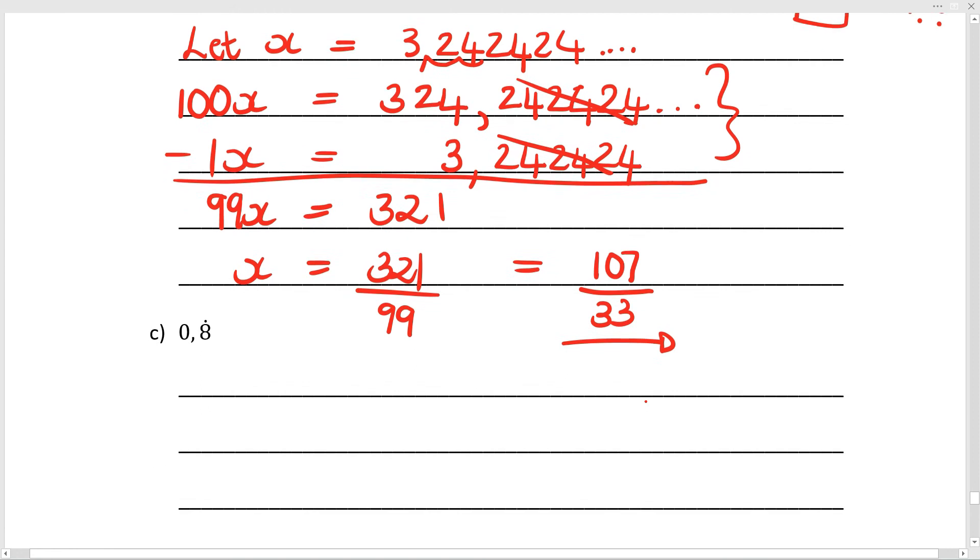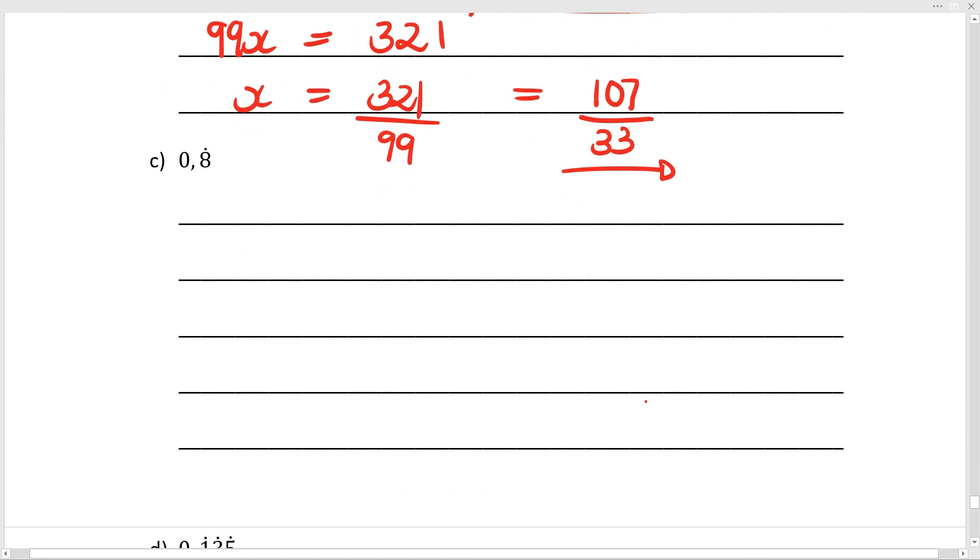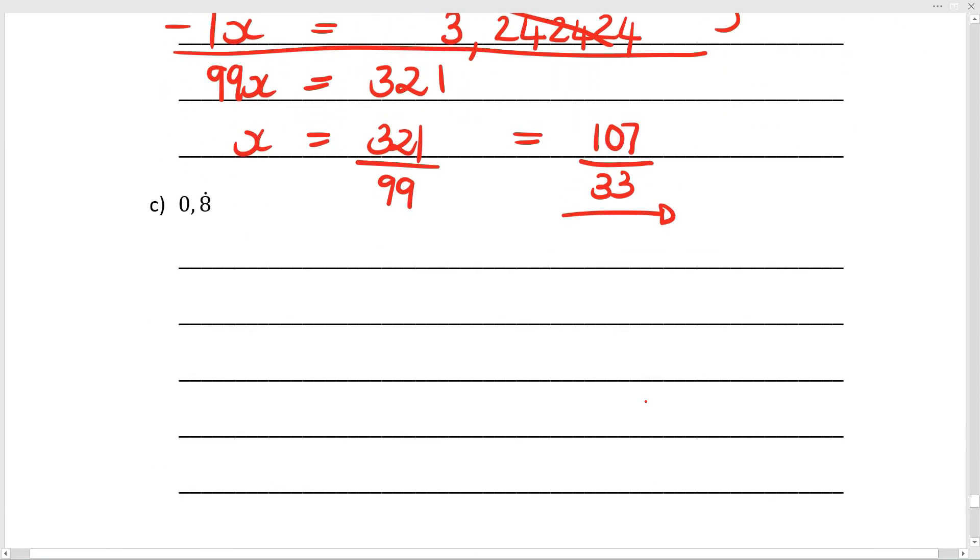Let's go back to one that has one digit repeating - my 0.8. One digit repeating, so I'm going to multiply by 10. See if you can get one step ahead of me in this section of the video. Let x equal the 0.8 recurring. And now I'm going to say 10x. 10x equals 8.8 recurring.